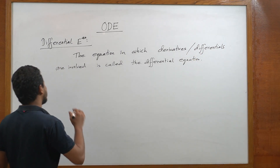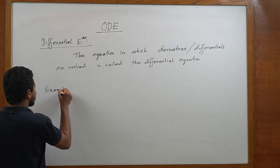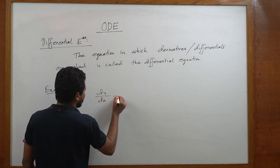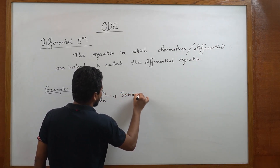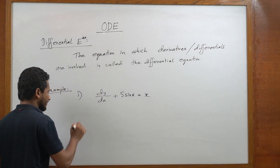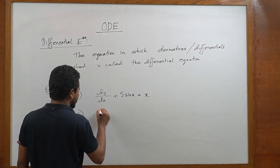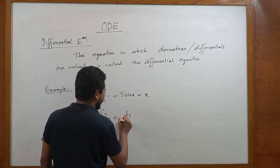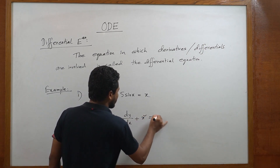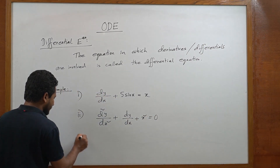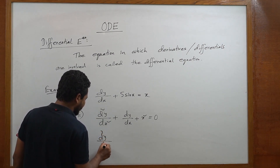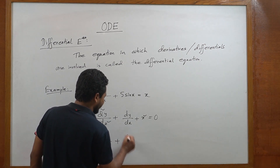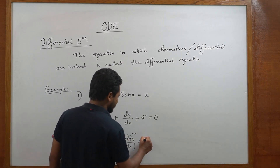Now let's see some examples. First example: dy/dx + 5sin(x) = x. Second example: d²y/dx² + dy/dx + x² = 0. Third example: d³y/dx³ + (dy/dx)² + 5y = 0.